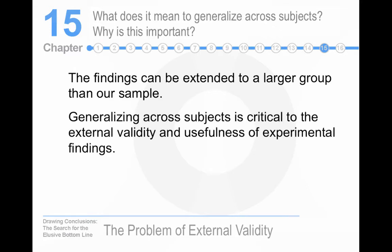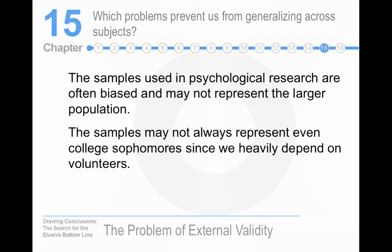What does it mean to generalize across people? Can we extend our conclusions from the college freshmen who volunteer for our study to the rest of humanity? That's a big issue. Which problems prevent us from generalizing? Remember the volunteer problem — people who volunteer are different from people in the rest of the population. So even among college sophomores, you're still studying people who volunteered from that group.